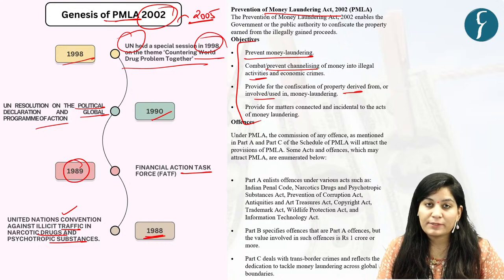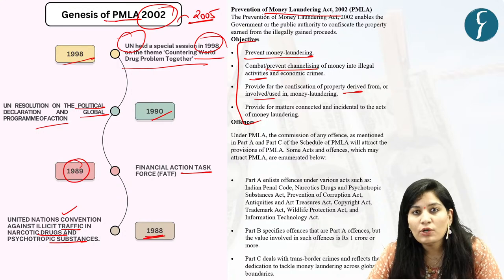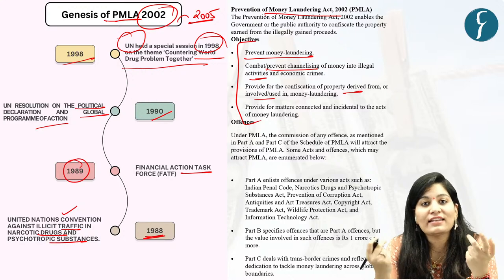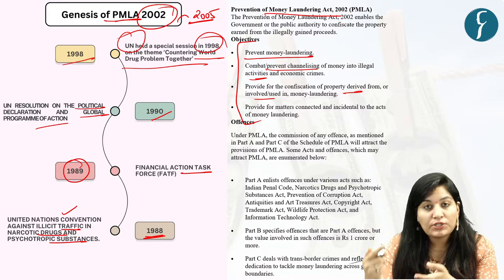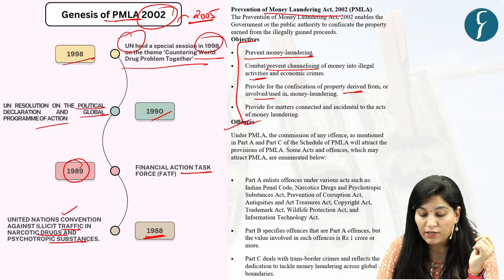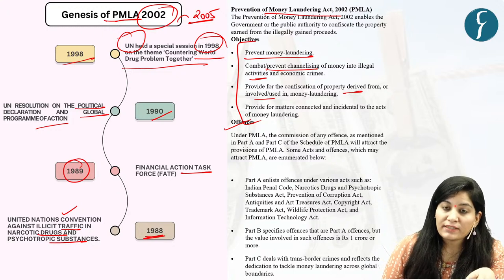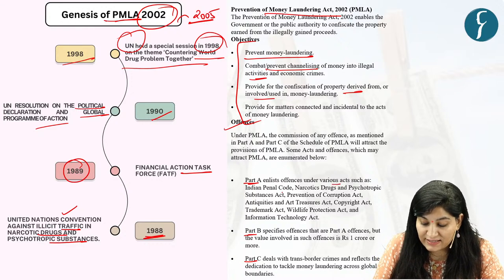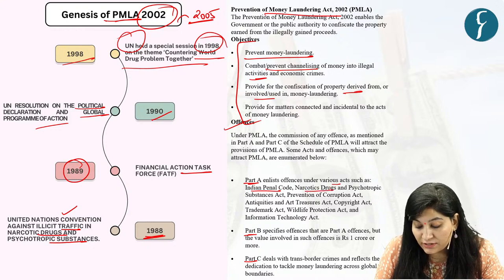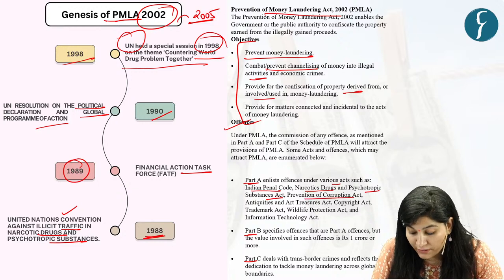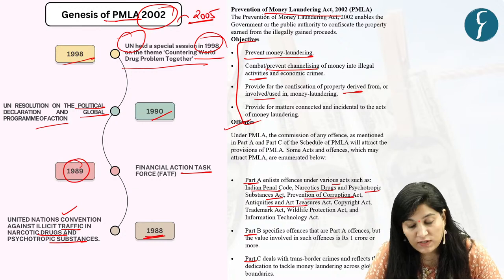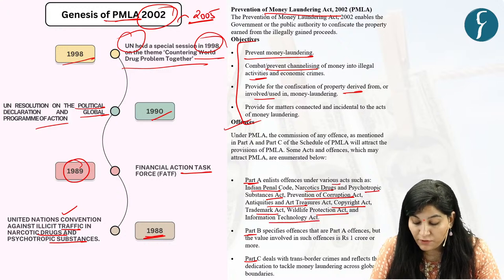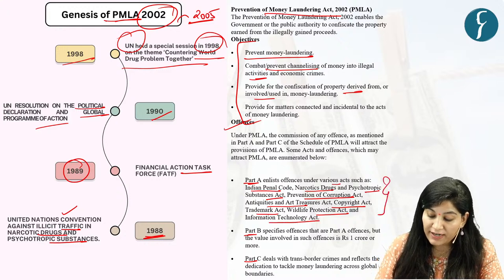Now let's see the offenses part. There are three parts: Part A, Part B, and Part C. Part A enlists offenses under various acts such as Indian Penal Code, Narcotics Drugs and Psychotropic Substance Act, Prevention of Corruption Act, Antiquities and Art Treasures Act, Copyright Act, Trademark Act, Wildlife Protection Act, and Information Technology Act. Part B covers offenses of Part A where value involved is more than 1 crore. Part C deals with trans-border crimes.